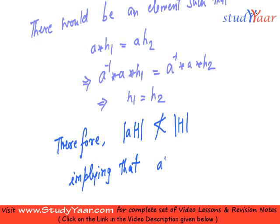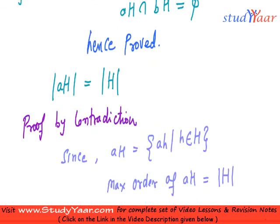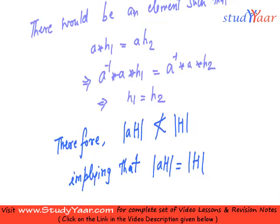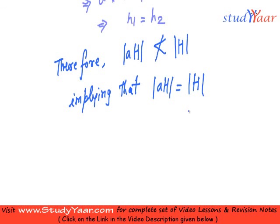Implying that the other case is true. And what is the other case? The other case is this. Implying that this is equal to this. Because we only have two possible cases over here. Either it is less or it is equal. Since it is not less, therefore, it is equal, right.